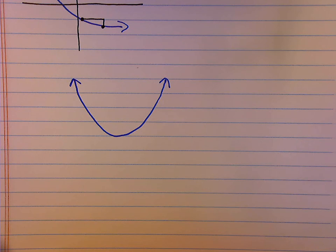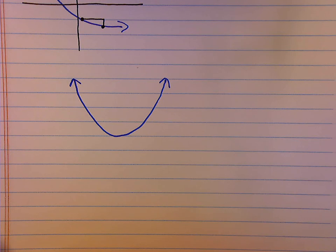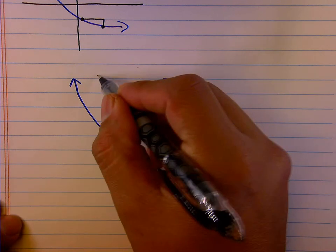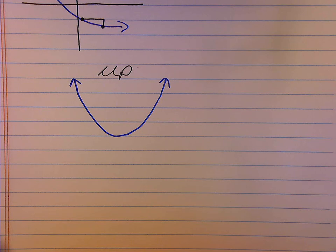An easy way to help you remember this: any time you are looking at a graph, whether it is decreasing or increasing, if that graph looks like it's part of a smile, then you are concave up. When you are concave up, you smile.